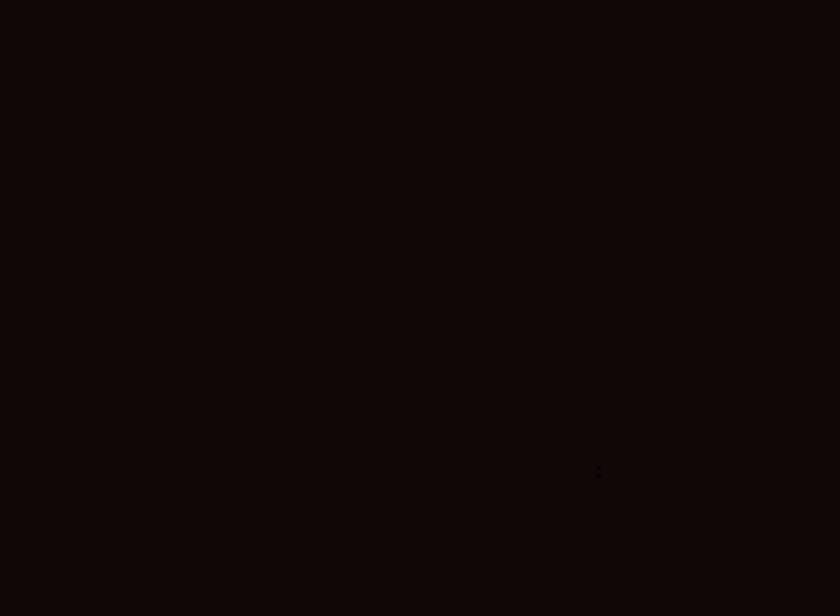So to just summarize this thing for our first law, we can write it like this. The change in energy of the system is related to the heat, which is T times delta S plus the work, which is P times delta V. So that's the Q plus W. Heat transferred in or out of the system, and then work done to or by the system. If the work is done to the system, this is positive and the energy gets increased. And then if the work is done by the system, then energy would decrease.